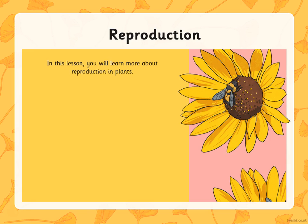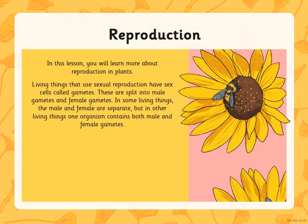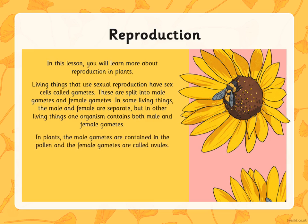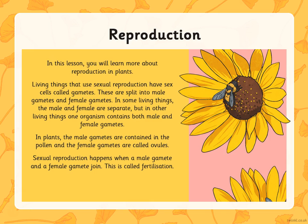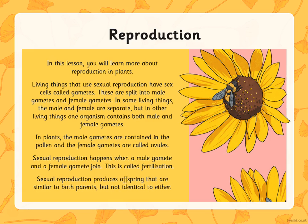In this lesson you will learn about reproduction in plants. Living things that use sexual reproduction have sex cells called gametes, which are split into male gametes and female gametes. In some living things the male and female are separate, but in others one organism contains both male and female gametes. In plants, the male gametes are contained in the pollen and the female gametes are contained in the ovules. Sexual reproduction happens when a male gamete and a female gamete join — this is called fertilization — producing offspring that are similar to both parents but not identical to either.